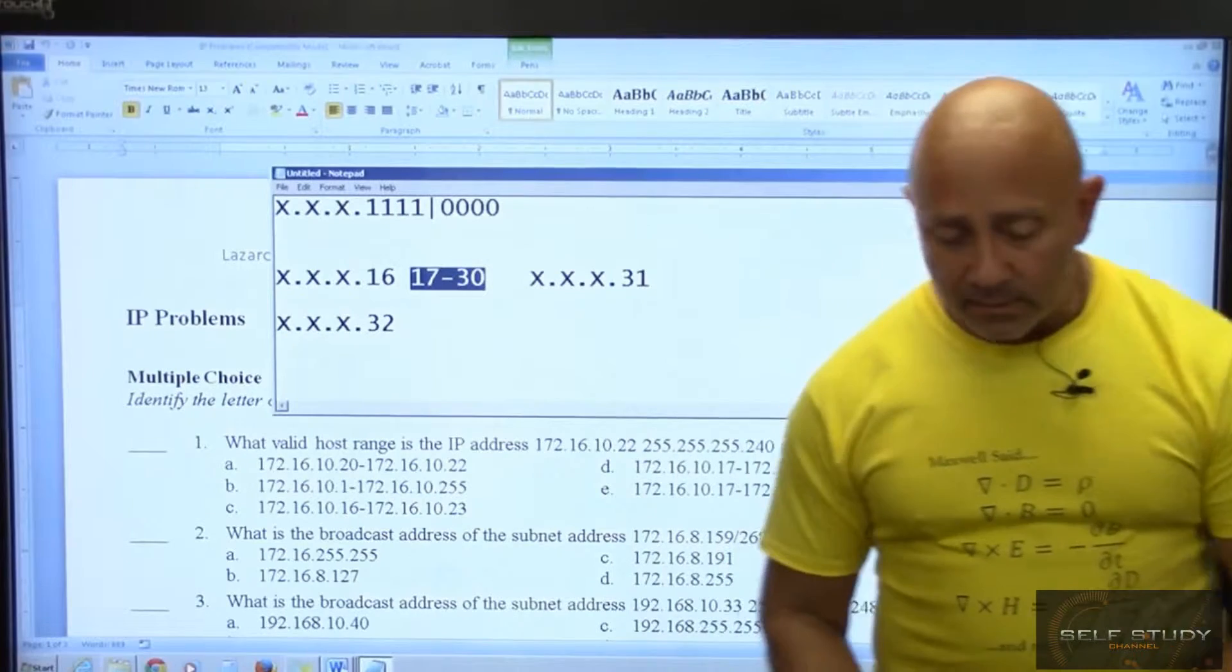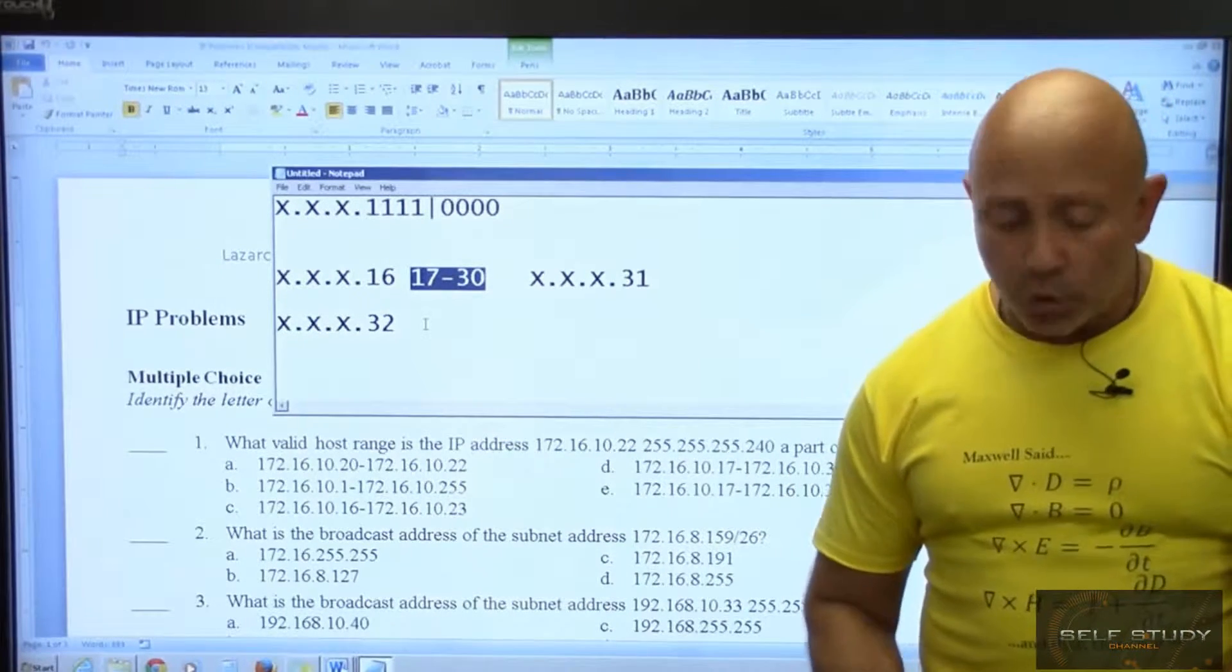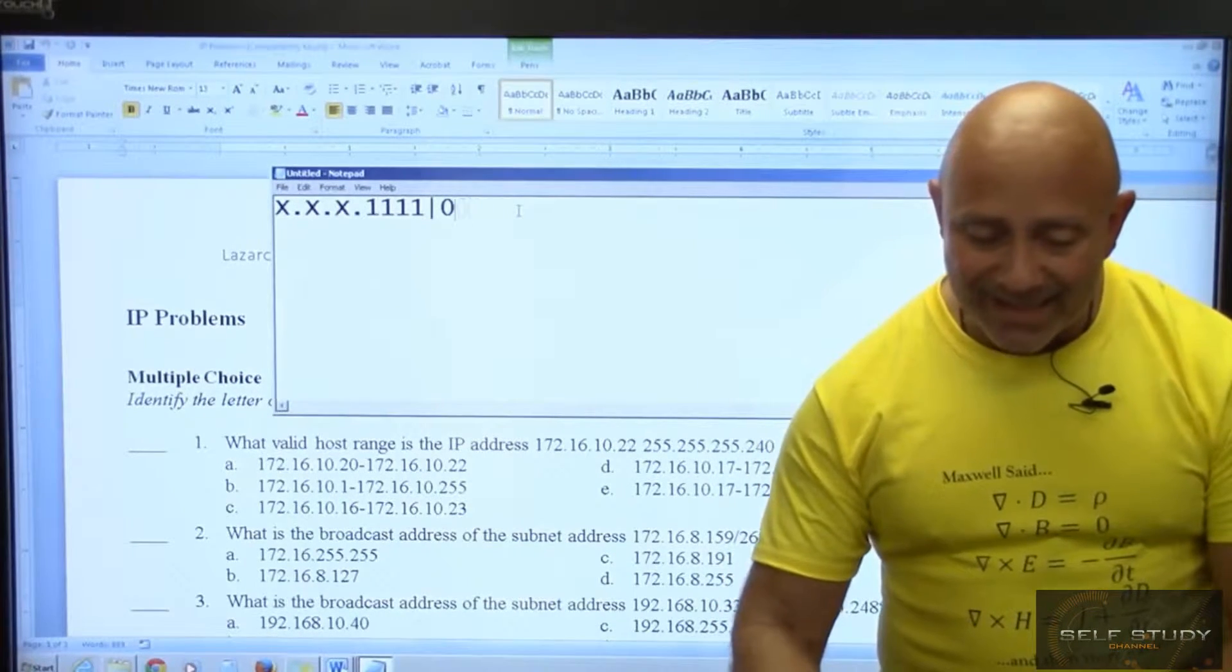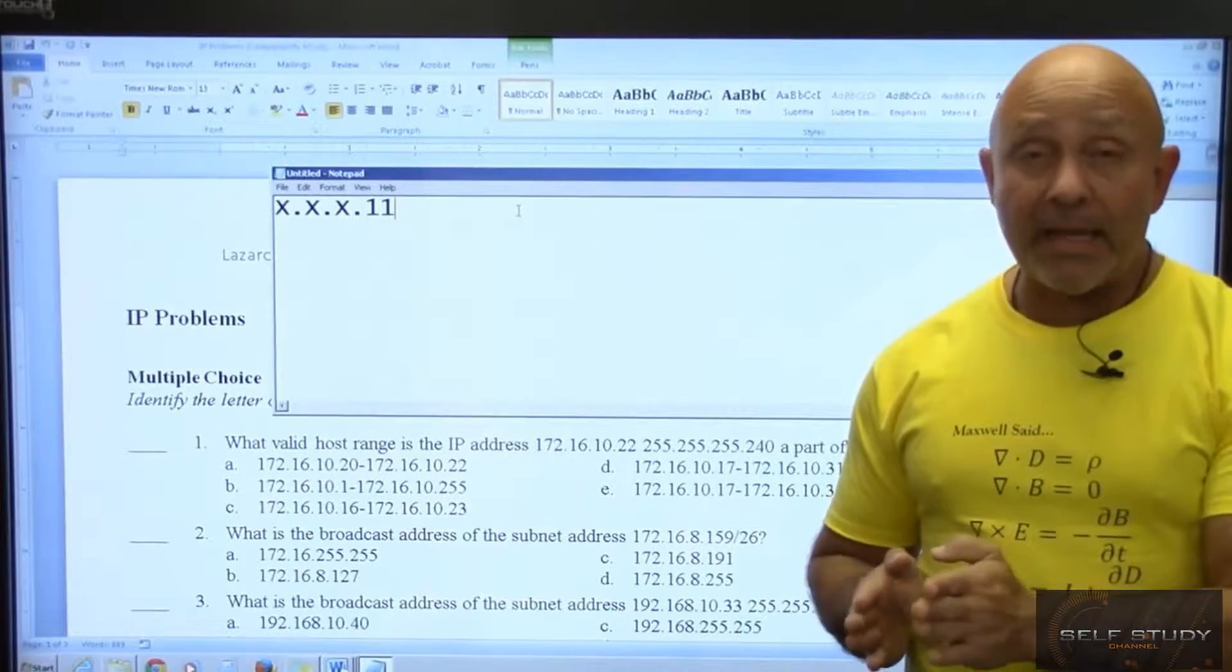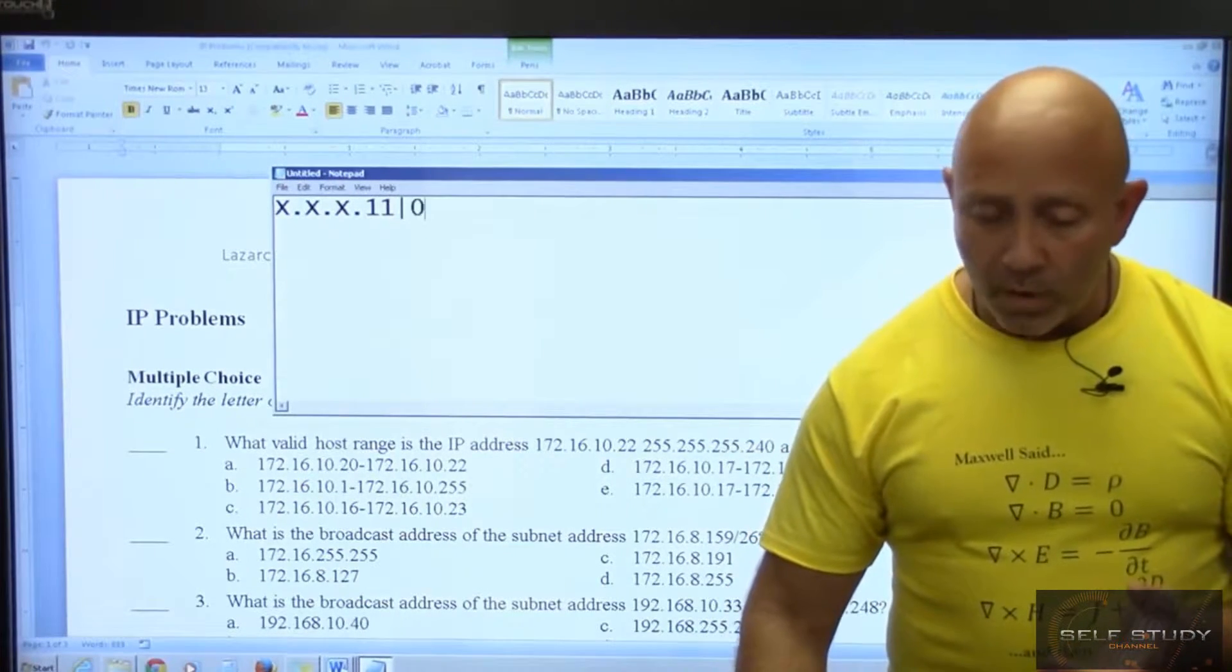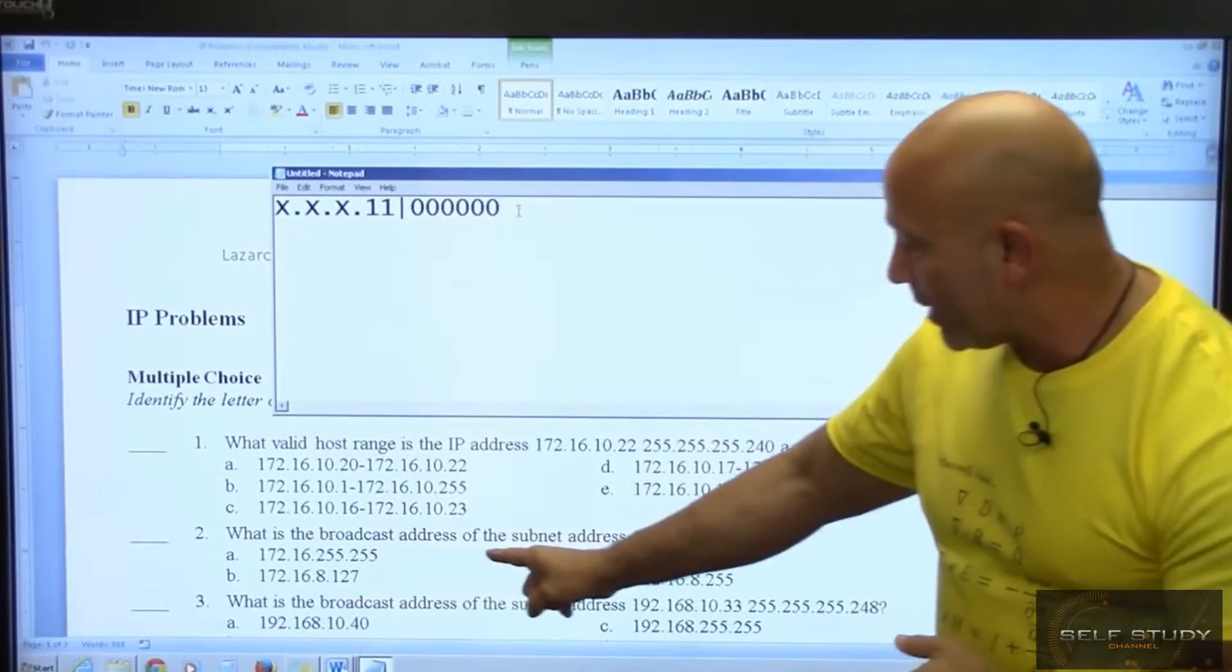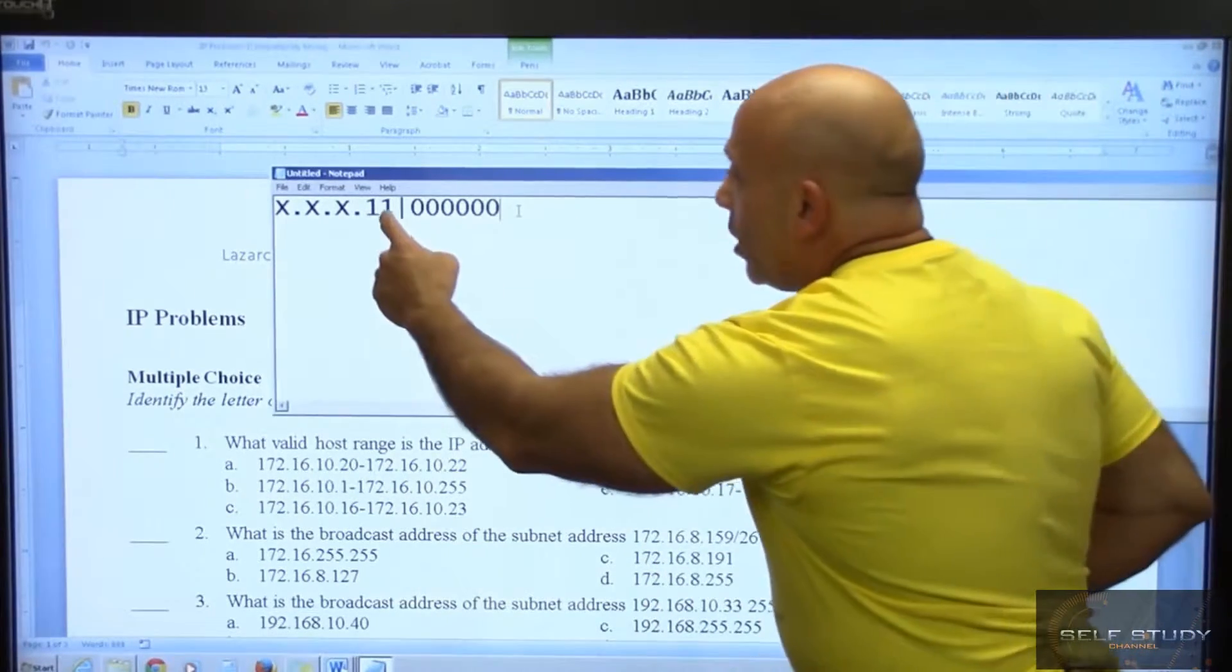Again, what am I focusing on? I don't care about anything else then. The first thing I need to do is draw that line. Draw that line - it's a slash 26, so there you go. That was easy enough - 26 bits on, 8, 8, and 8, that's 24, 25, 26. Then 1, 2, 3, 4, 5, 6, that's 8 bits. What is the broadcast address of 159?